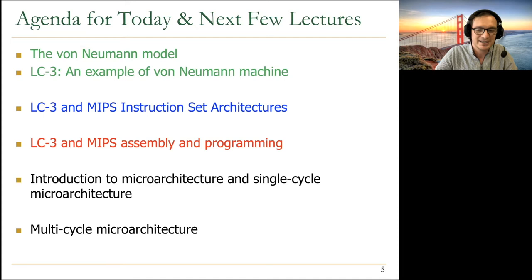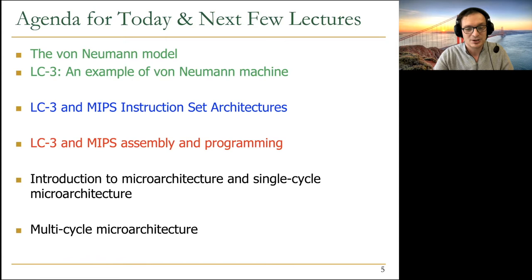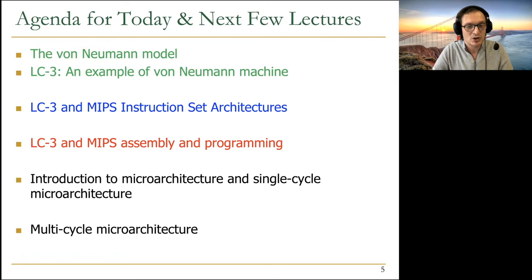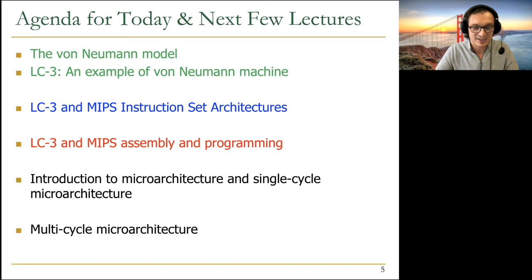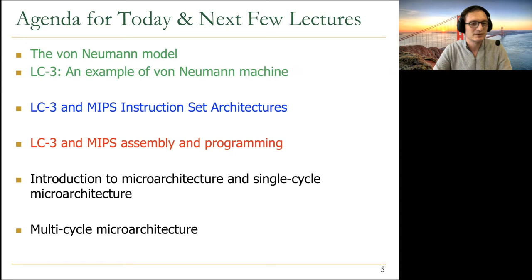We're going to do assembly programming and machine code programming as well. Next week we'll switch to introduction to microarchitecture, single cycle and multi-cycle microarchitecture, and then build up to out-of-order execution and other paradigms. Today we're going to cover some microarchitecture as well, because it's very hard to cover instruction sets without going into implications on how an instruction gets executed. Today is really about an execution model — the von Neumann model — which encompasses the instruction set architecture as well as the microarchitecture.